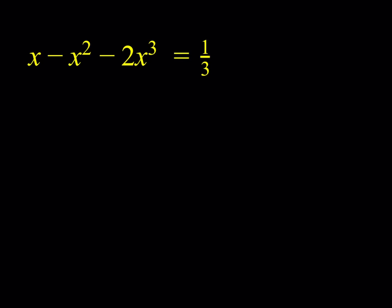Hello everyone, in this video we're going to be solving a cubic equation. So we're going to multiply both sides by 3 first. Let's go ahead and do that. It's going to give us 3x minus 3x squared minus 6x cubed equals 1.